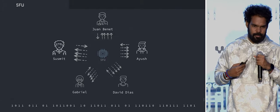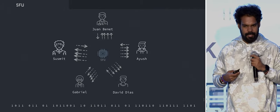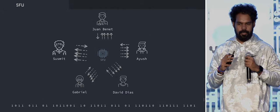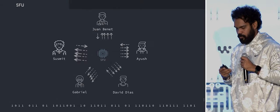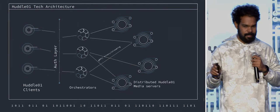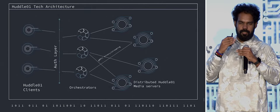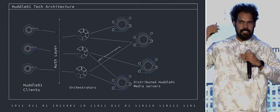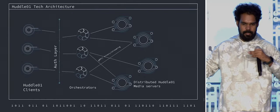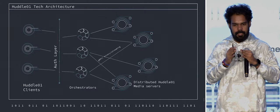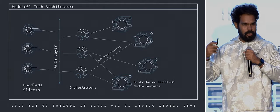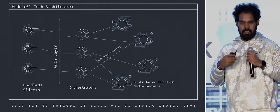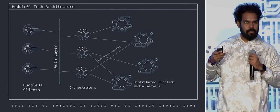At Huddle, we have been working on this for the past three years with a lot of advancements, because for us catering to the experience is of utmost importance, and we engineer our technology on top of it. This is our technical architecture: we have a bunch of orchestrators that act like a brain, and media servers that are distributed in nature and act like muscles. The Huddle client gives the call request to this architecture, which is load-aware, region-aware, and scales on demand.